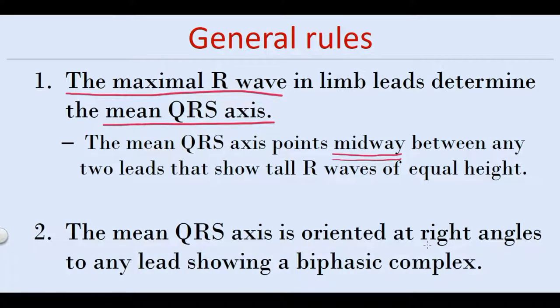The second is, the mean QRS axis is oriented at right angles to any lead showing a biphasic complex. In this situation, the mean QRS axis points in the direction of leads showing tall R waves.